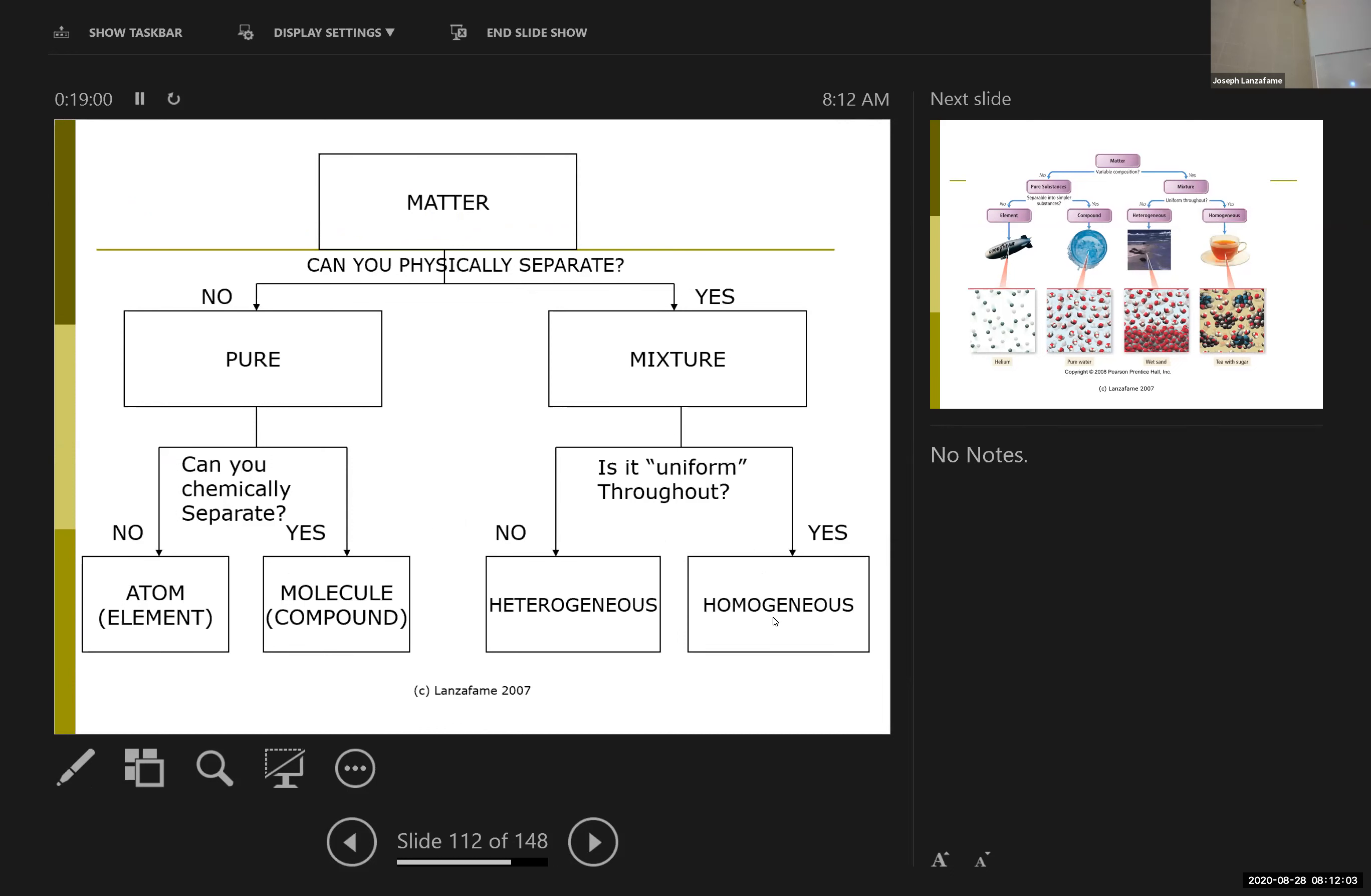But if I take matter, which, again, is something that has mass and takes up space, I can classify it into one of these four groups. And it's really based on two pair of questions. First and foremost, can you physically separate it? Meaning I can physically remove one component from another.